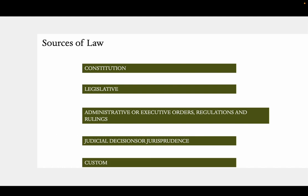And then, custom. Custom refers to practices done since ancient times that have become acceptable to the people. Custom takes a lot of time — many years — before it becomes acceptable to the people. An example is the Sharia law. Naturally, a family has one spouse, but because of customs, Muslim men are allowed to marry another provided that it is in accordance with the Sharia law. That is custom.